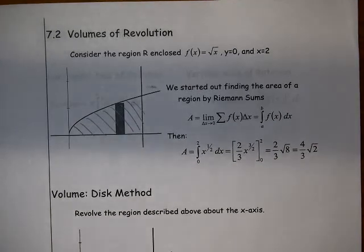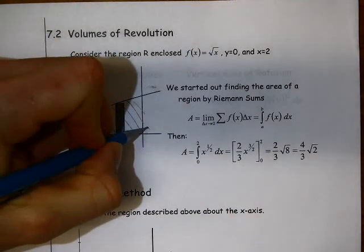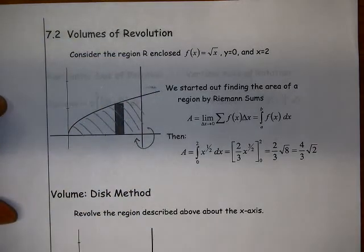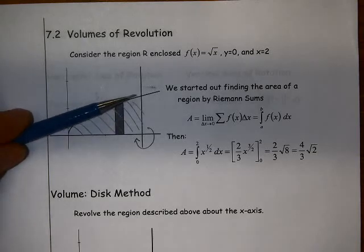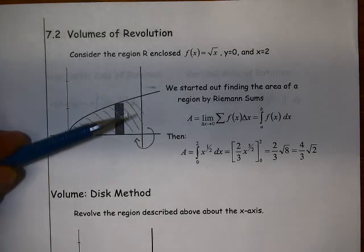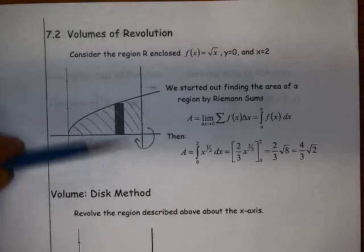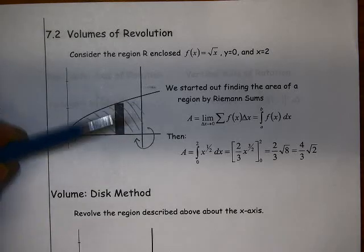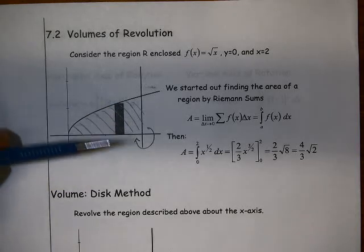With the volume of revolution, what we're doing now is we're taking that area, and we are rotating it around the x-axis. Imagine we could take this little cutout and rotate it this way, and it would sweep out a volume as we rotated it. We rotate it 360 degrees, and we sweep out a volume.